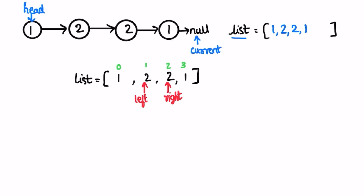We increment the left pointer and decrement the right pointer, then check again if the values at left and right are equal — yes, they are equal. So again we decrement right and increment left. Once left crosses right, the iteration ends. Since we never returned false, we return true as the output.